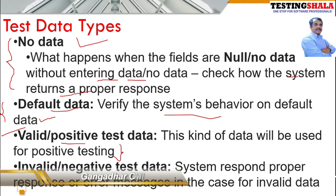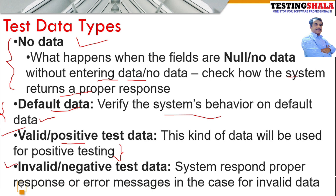The fourth type is invalid or negative test data. We provide invalid or negative data to the application to see how the system responds, and especially how error messages are handled when invalid or negative test data is provided.